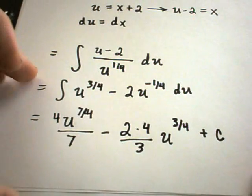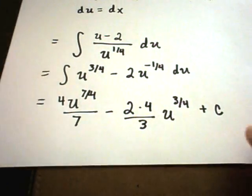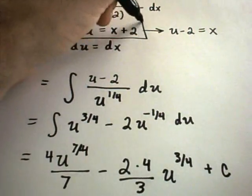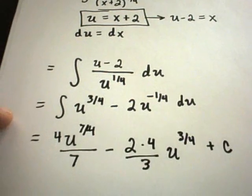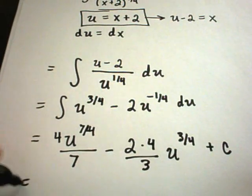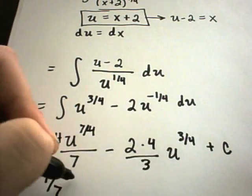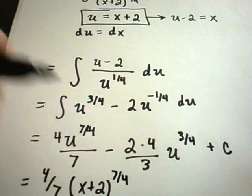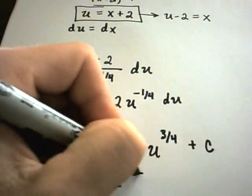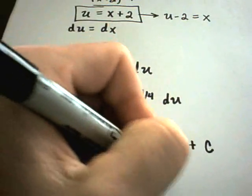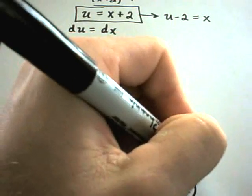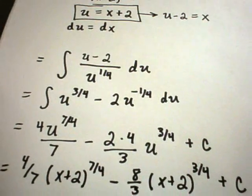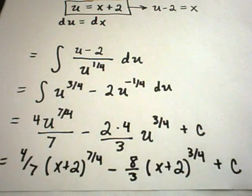And again, the last thing I need to do here is replace my u's with my x plus two that I had found from the original substitution. And if there's any simplification, I'll do that as well. So I'll have four-sevenths u, which is x plus two, to the seven-fourths, minus eight-thirds u, again which is x plus two, to the three-fourths, plus c. And there is your antiderivative.